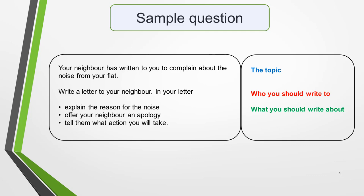Your neighbour has written to you to complain about the noise from your flat. Write a letter to your neighbour. In the letter, explain the reason for the noise, offer your neighbour an apology, and tell them what action you will take. The first sentence gives the topic, the second sentence tells you who you should write to — in this case your neighbour — and the three bullet points tell you what you should write about. Understanding the different parts of the question will help you to quickly analyse and plan your answer.